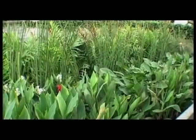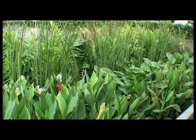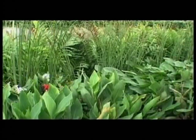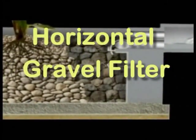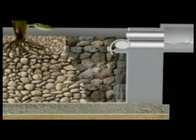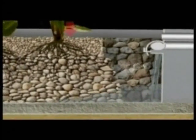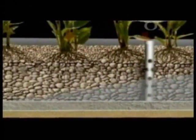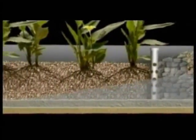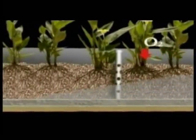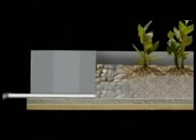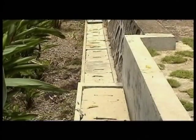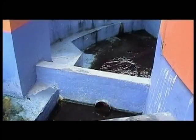The fourth stage is a horizontal gravel filter — a filter consisting of sand, gravel and plants. During this stage, remaining pollutants in the wastewater will be partially absorbed and biologically decreased in the filter. This process is caused by plants, roots and bacteria growing in the filter.